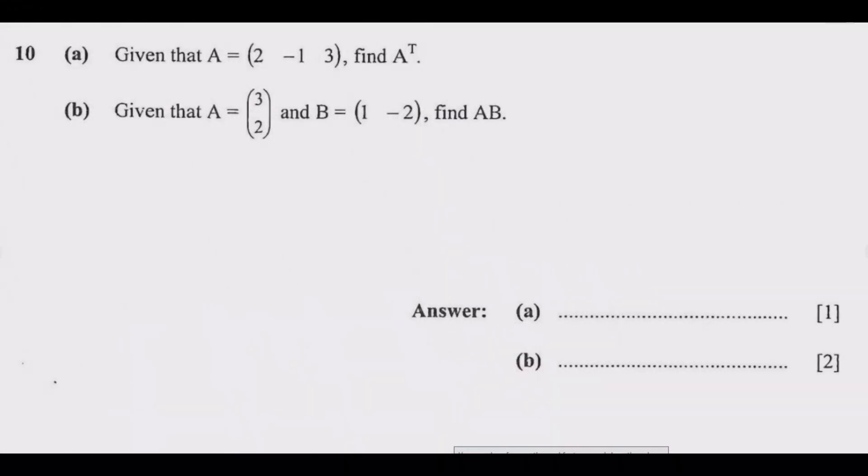We look at Question 10. Part (a): Given that A equals a row matrix with elements 2, -1, 3, find A transpose. Part (b): Given that A is a column matrix with elements 3 and 2, and B is a row matrix with 1 and -2, find AB.